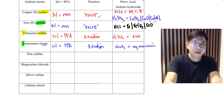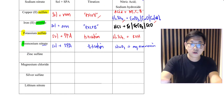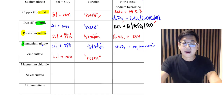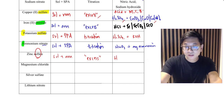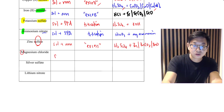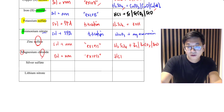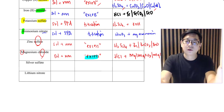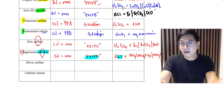For zinc sulfate — zinc is non-SPA, so it is soluble and non-SPA, and we use the excess method. Because it is a sulfate, we use sulfuric acid. We can use zinc metal, zinc carbonate, zinc oxide, or zinc hydroxide — all work. For magnesium chloride — also non-SPA and soluble, so we use the excess method with hydrochloric acid, plus magnesium metal, magnesium carbonate, or magnesium oxide.